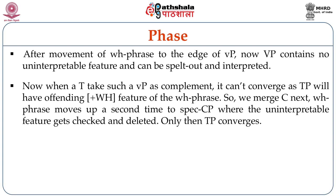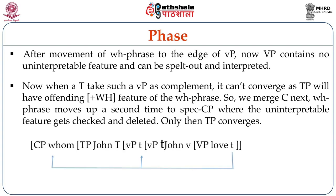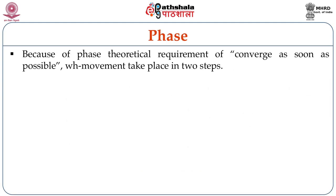Only now does TP converge. You can see the structure on screen: who, which originated from the object position under love, raises first to the edge of little vP and then further up to the edge of CP. From this structure, it can be seen that because of the phase-theoretical requirement to converge as soon as possible, even such a simple interrogative sentence has WH-movement happening in two steps.